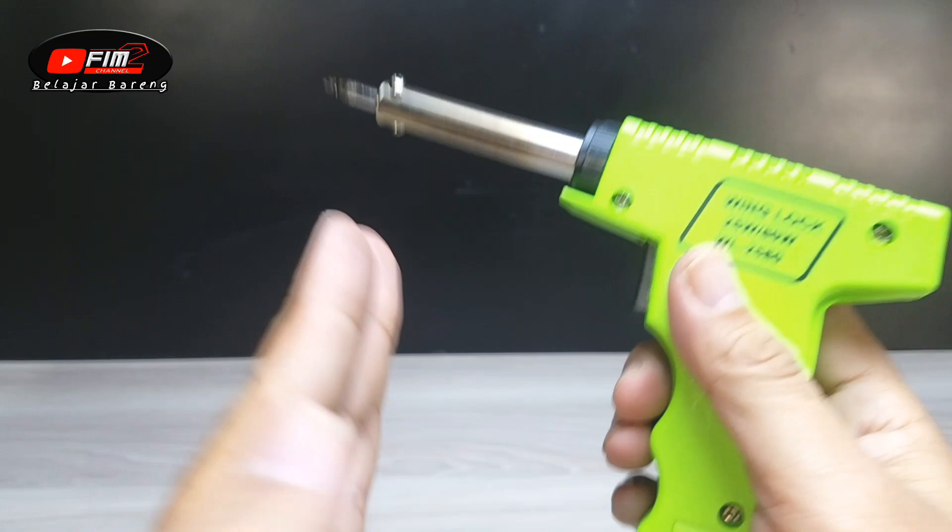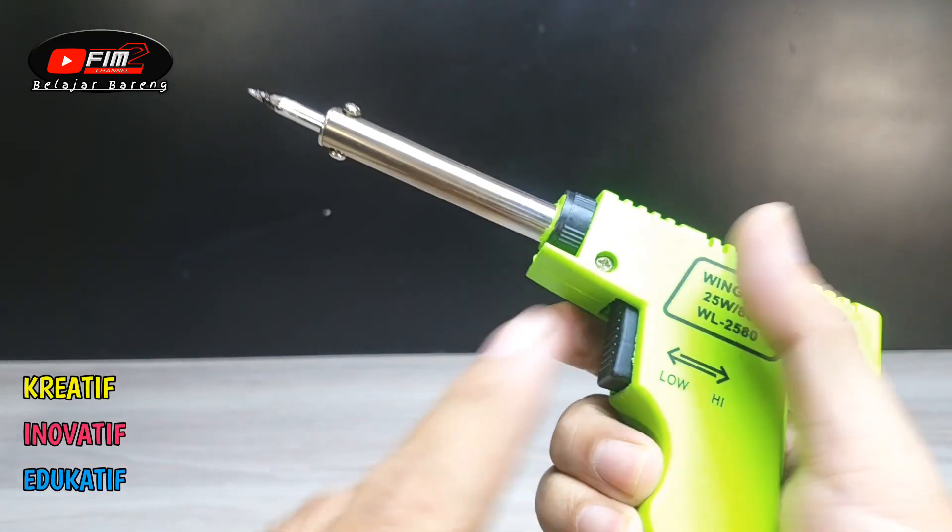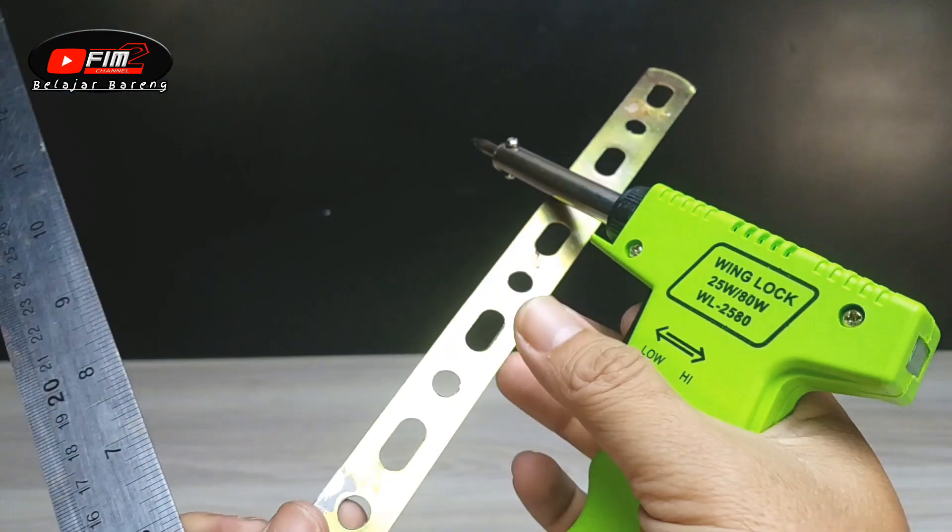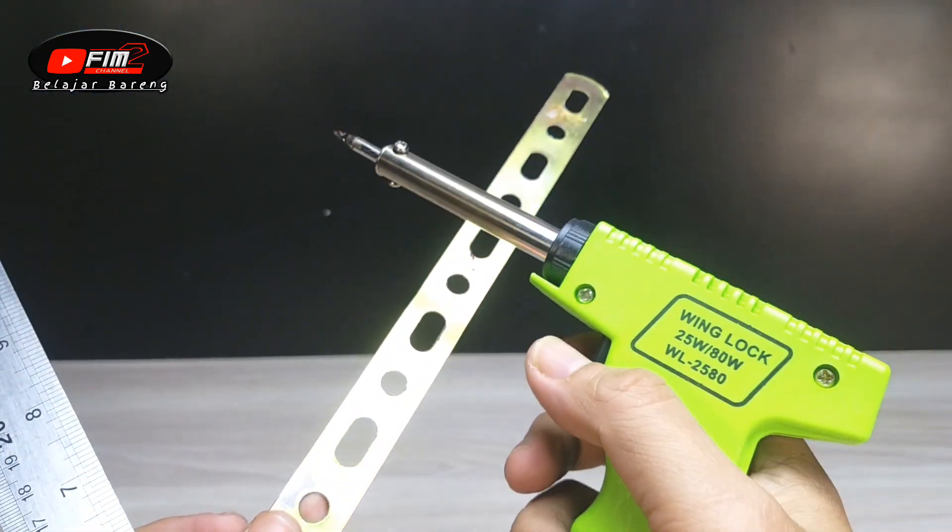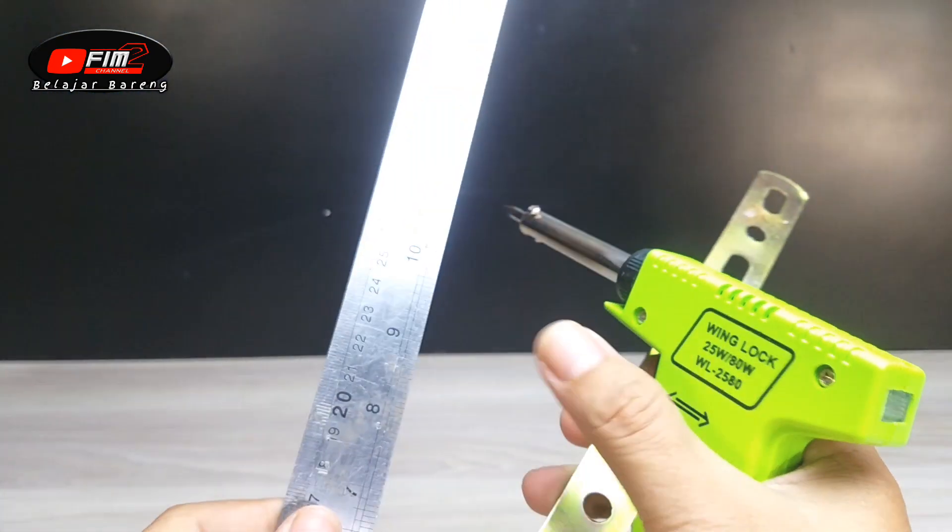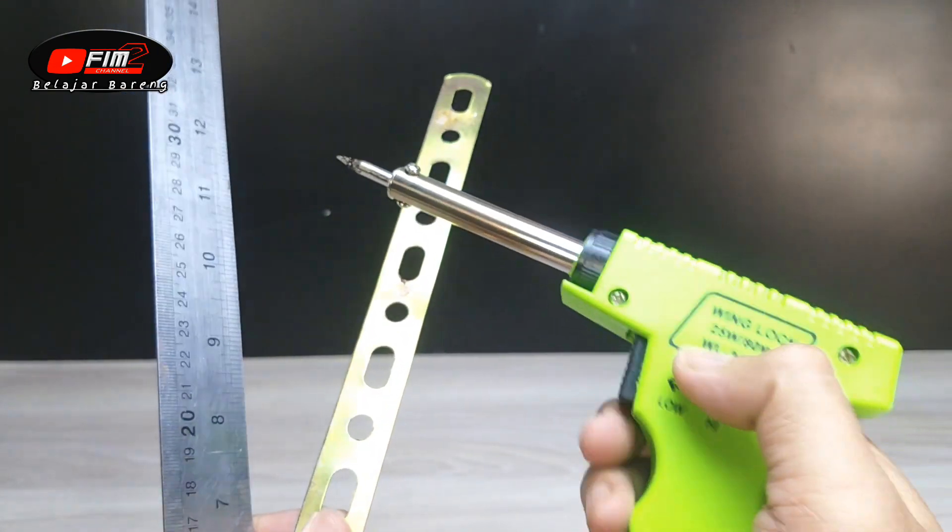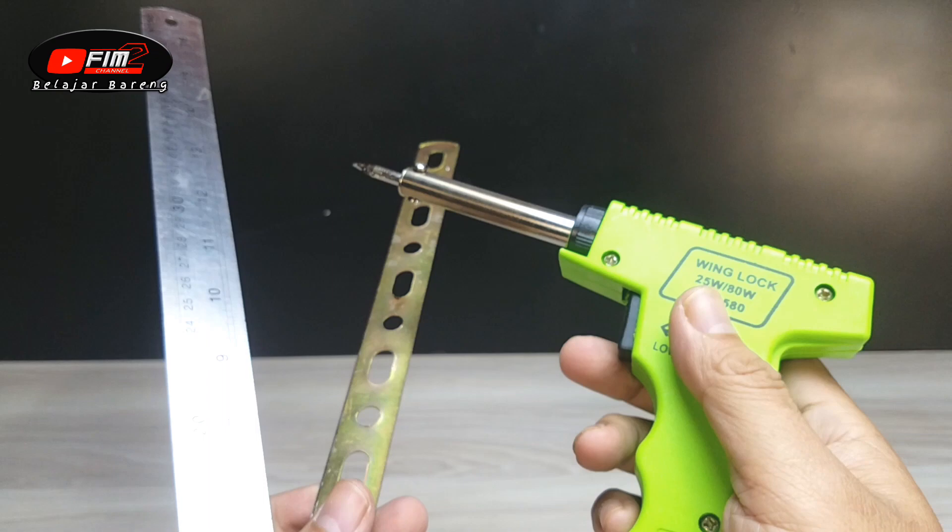Assalamualaikum warahmatullahi wabarakatuh. Selamat datang kembali di Vim2 Channel. Di video ini saya akan berbagi trik sederhana yaitu cara menyolder bahan besi dan stainless dengan mudah dengan cara membuat flux sendiri dari barang-barang sederhana tapi hasilnya dijamin kuat merekat. Tonton tutorialnya.